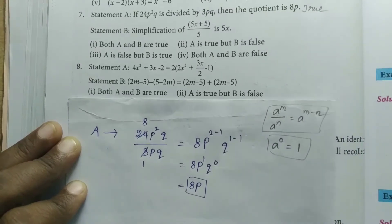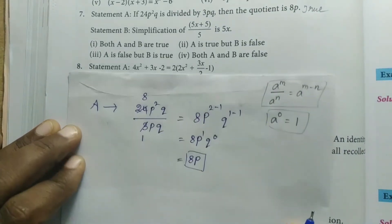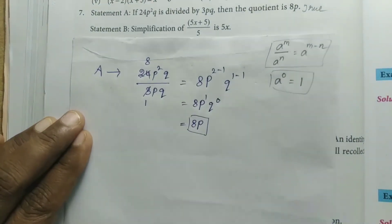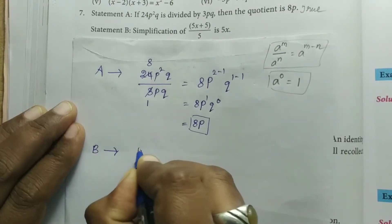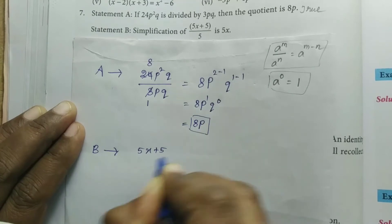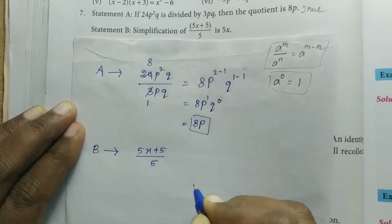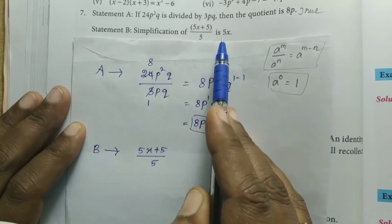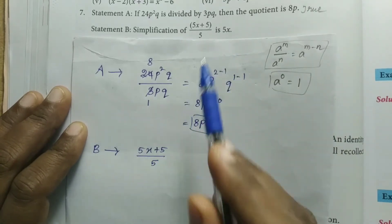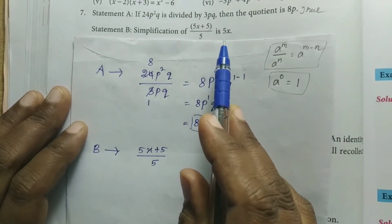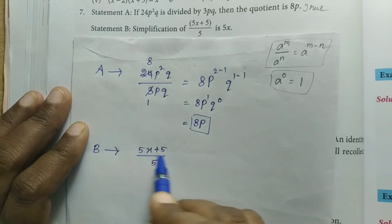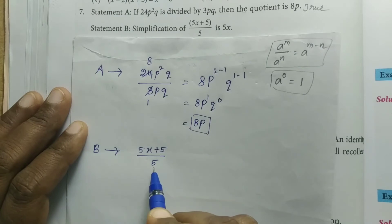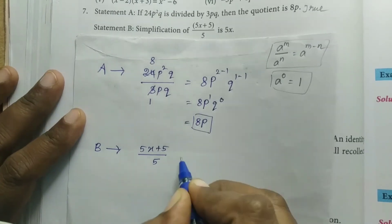Now let's look at the second statement. The second statement says: simplification of (5x + 5) whole divided by 5, that is equal to 5x. So when we solve, we should get 5x as the answer. Here, 5x + 5 is a binomial expression, and in the denominator the 5 is a common divisor.